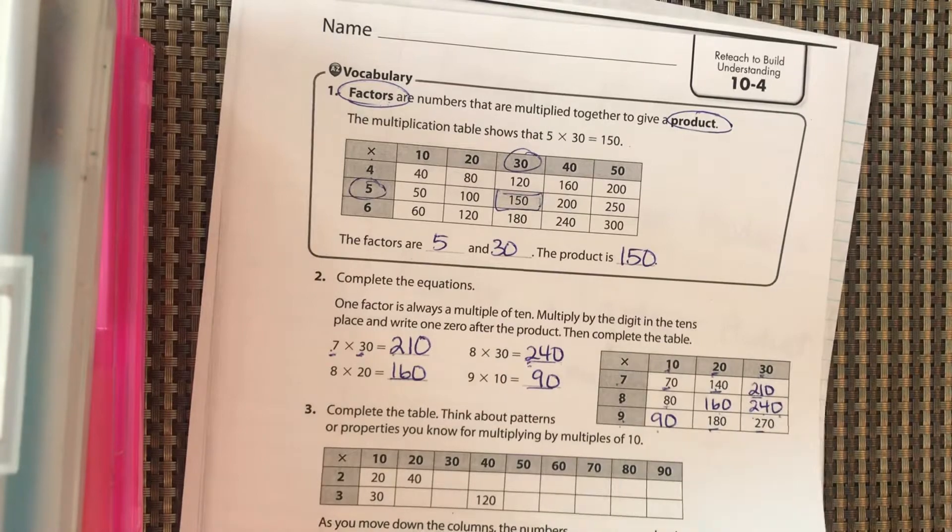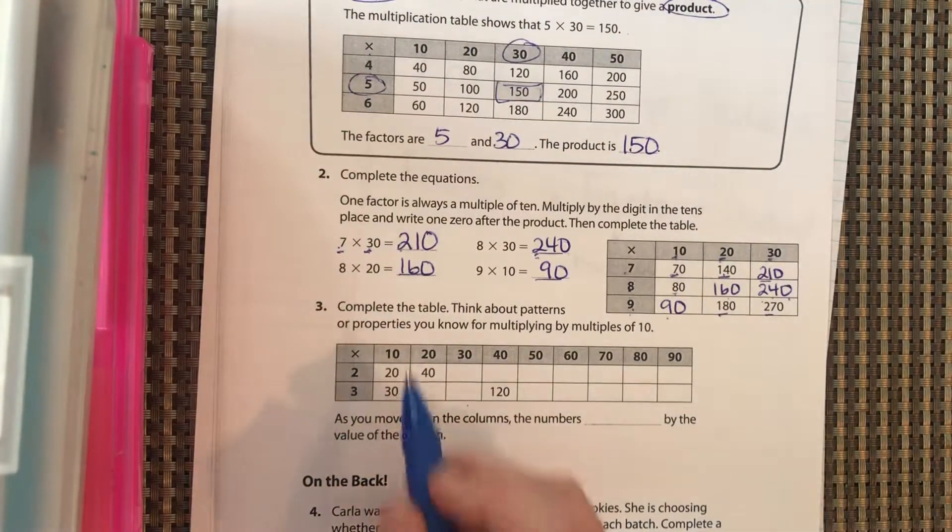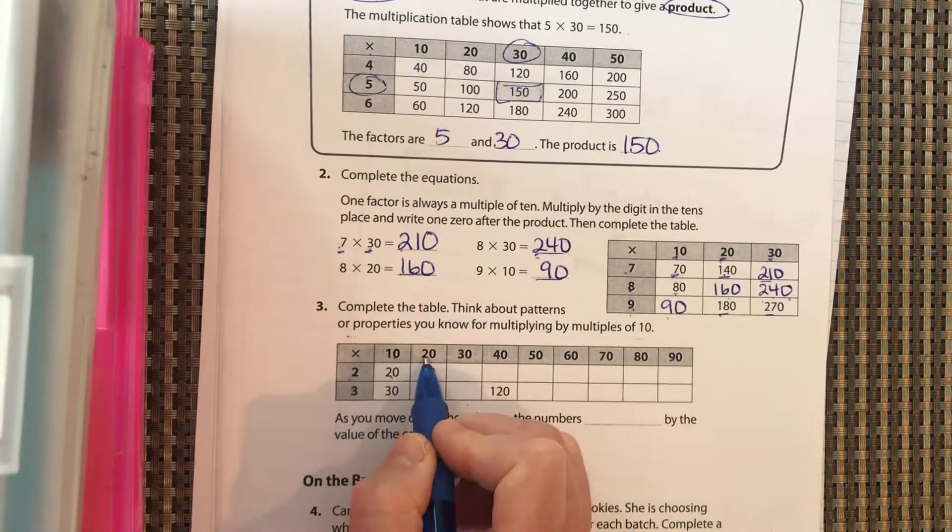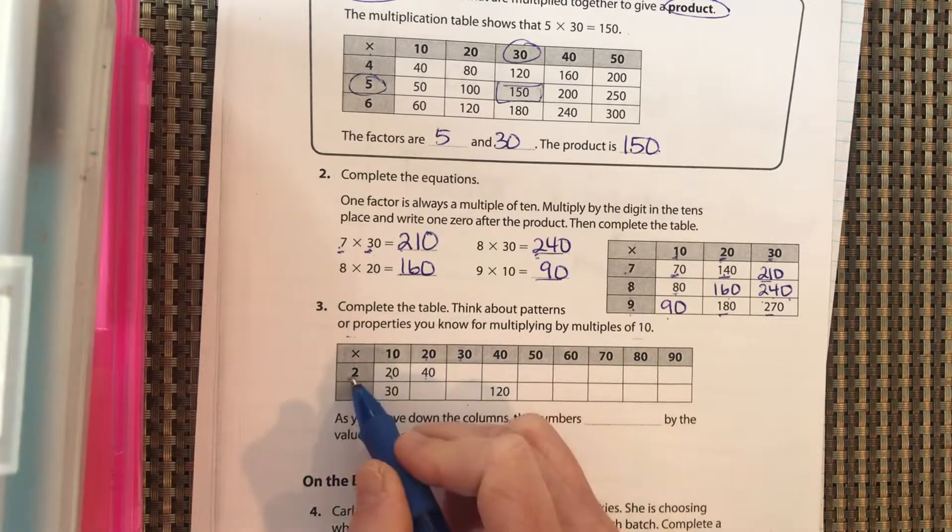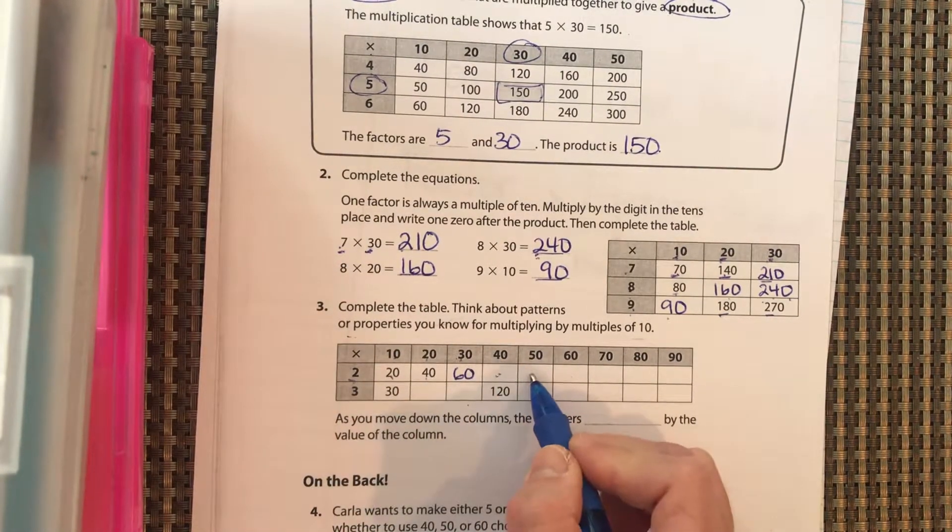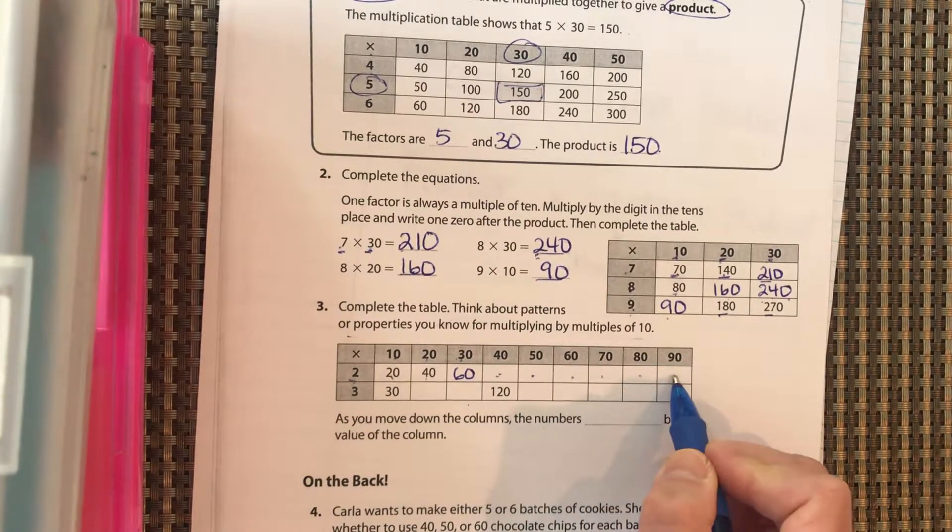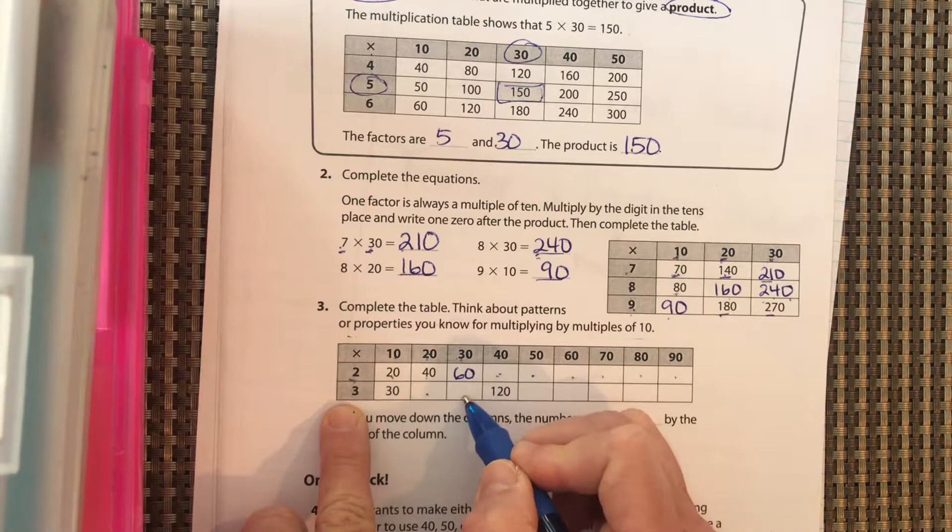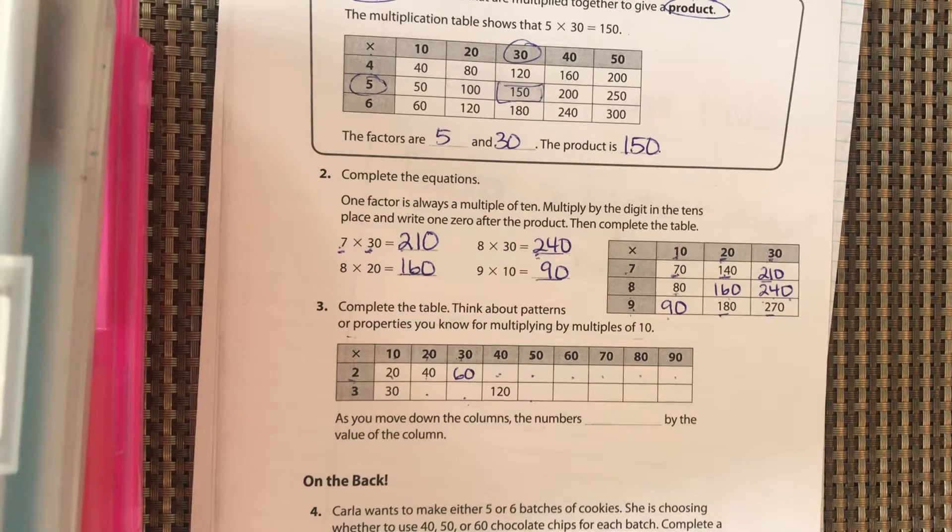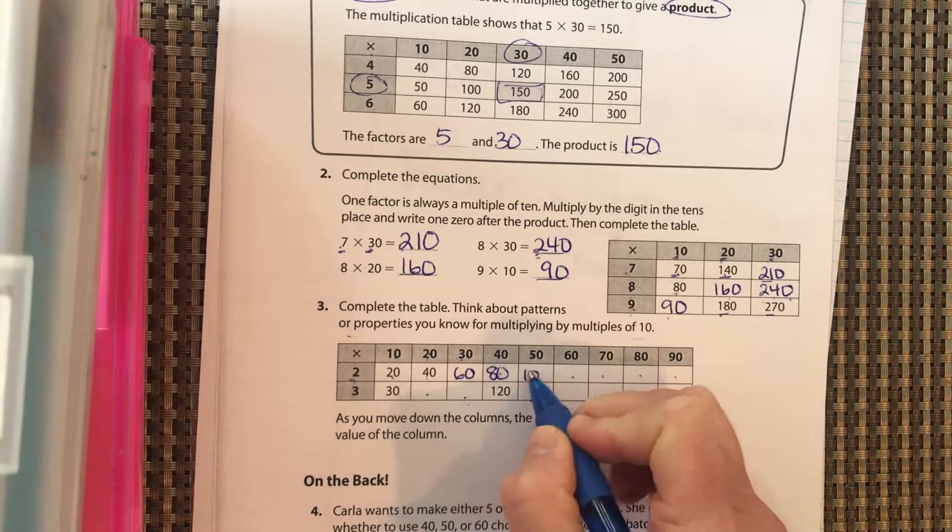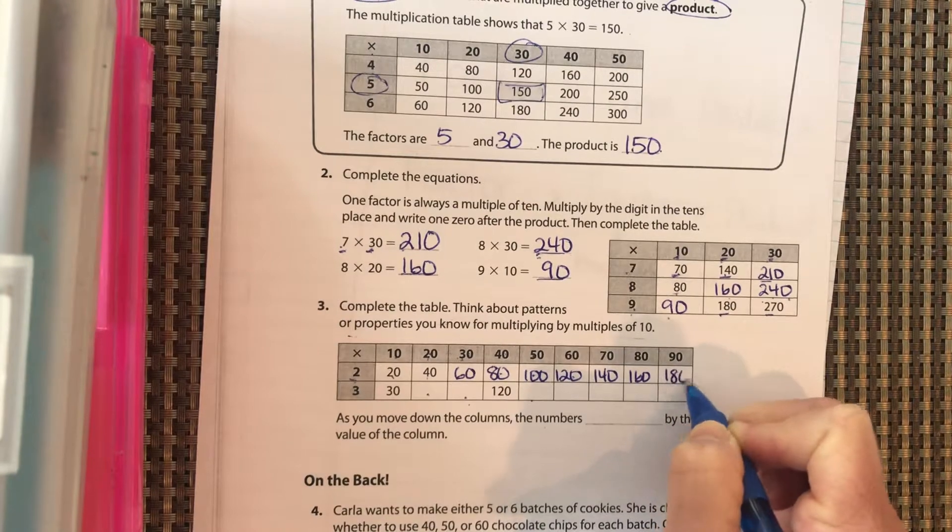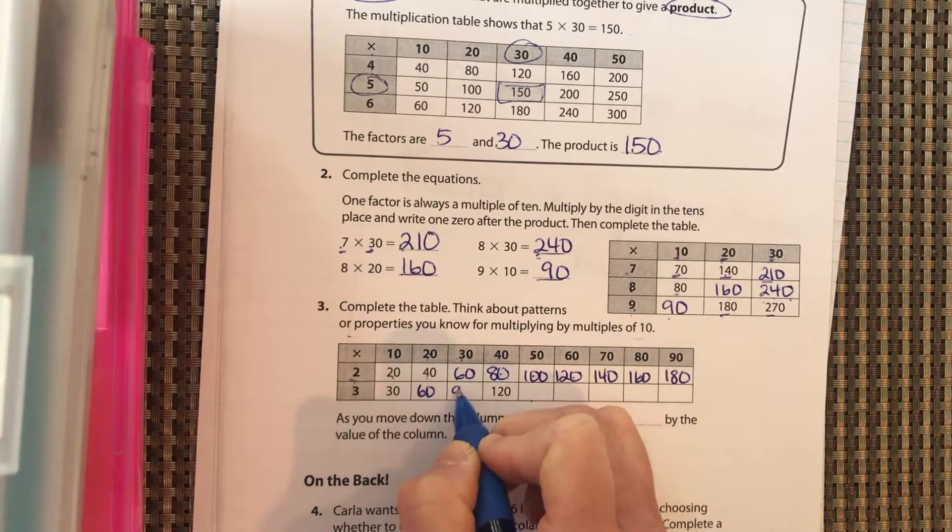All right, let's take a look here. Complete the table: think about the patterns or properties you know for multiplying by multiples of 10. All right, well we have two times 10 is 20, two times 20 is 40, two times 30—well, two times three is six with the zero. Okay, see if you can fill in the rest of these: two times 40, two times 50, two times 60, two times 70, two times 80, two times 90, and then the same here: three times 20, three times 30, three times 50. Okay, pause it and fill that in.